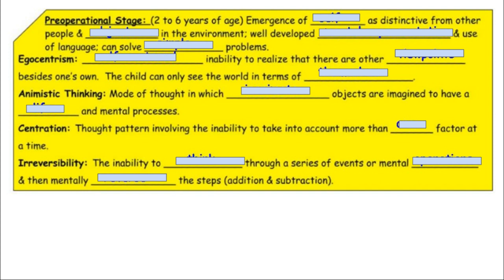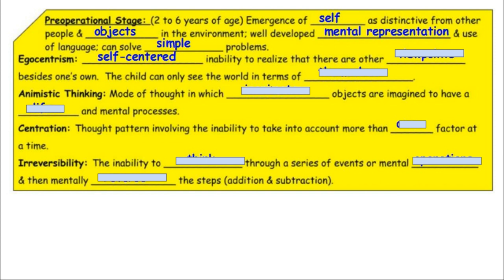The preoperational stage runs from ages two to about six. This is the emergence of the self as distinct from other people and objects in the environment, with well-developed mental representations, use of language, and the ability to solve simple problems. Children at this stage tend to be egocentric — they show self-centered behavior and an inability to realize that other people have viewpoints aside from their own. There's a tendency toward 'my way or the highway' thinking when dealing with toddlers.